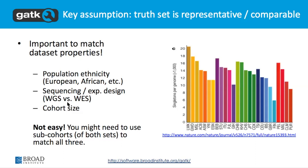A truth set isn't very useful if it's not truthful, if it doesn't represent the same kind of data that your call set represents. The most common variables that we control for are things like ethnicity — you see on the y-axis the number of singletons per genome — sequencing process, whole genome sequencing versus whole exome sequencing, and finally the size of cohorts. If the size varies by orders of magnitude, you're going to end up with different statistics, so it's probably not worthwhile to do that.